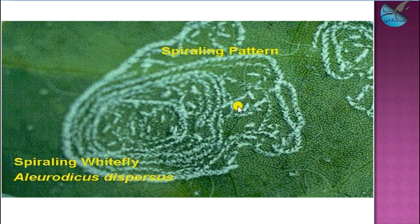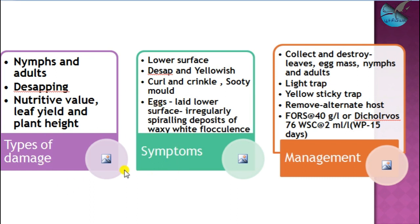This is the spiraling pattern of egg laying on the lower surface of the leaf. The damage symptoms are more or less the same: yellowing of leaf, curling and crinkling, sooty mold appearance, and the irregular spiraling pattern is the unique symptom of the spiraling whitefly. For management, yellow sticky traps can be installed, as whiteflies are attracted to yellow color, for both monitoring and management. Light traps can also attract this pest, and removal of alternate hosts like weeds around the field is recommended.